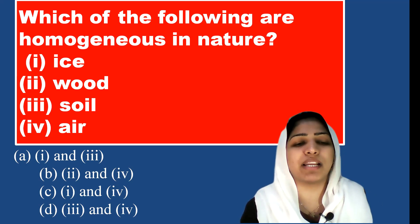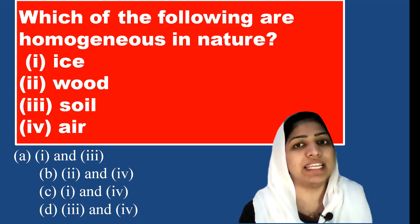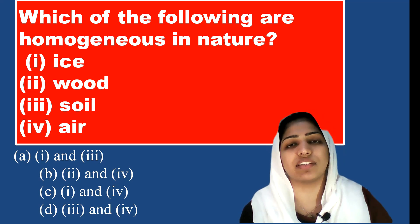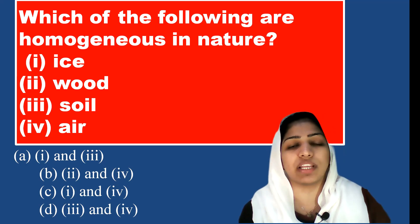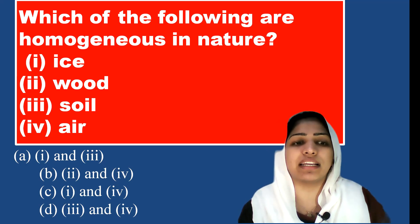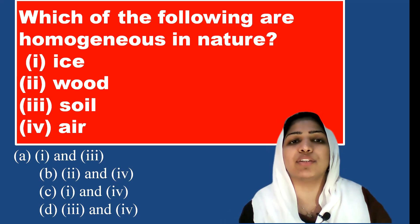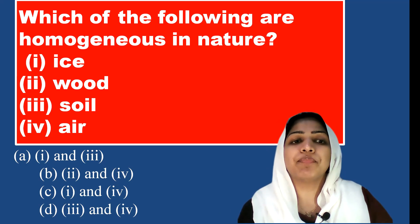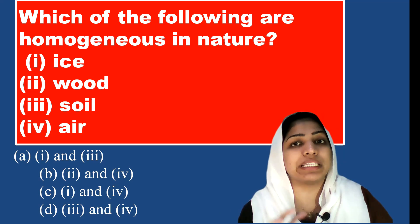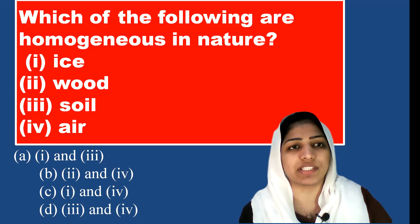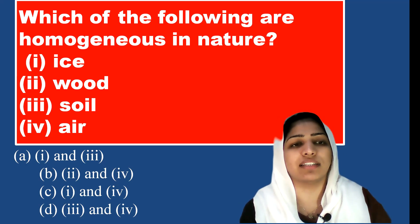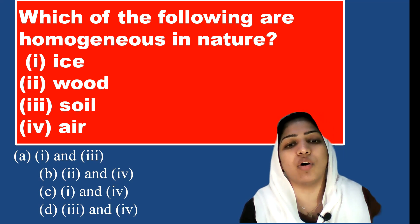Air is a mixture of gases — hydrogen, nitrogen, oxygen. These are all gases. It has a uniform composition, so air is a homogeneous mixture. Ice and air are homogeneous, so the answer uses options 1 and 4.